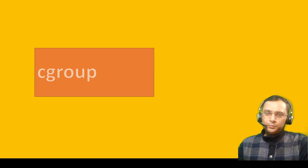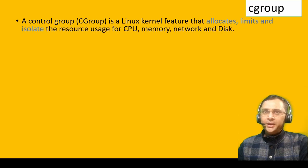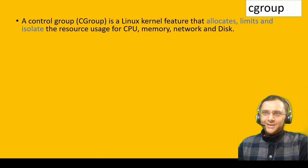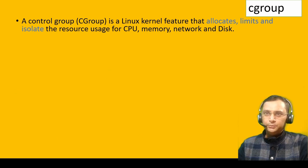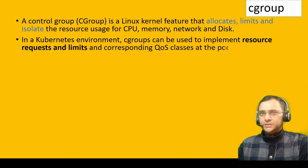Let's explore what is cgroup. A control group, or cgroup, is a Linux kernel feature that allocates, limits, and isolates the resource usage of CPU, memory, network, and tasks. The component that helps our processes get hardware resources is called cgroup. It not only works as a mediator but also controls how much resources a process can utilize. In a Kubernetes environment, cgroup can be used to implement resource requests and limits and the corresponding quality of service classes at the pod level — we will cover this when we cover the quota topic.